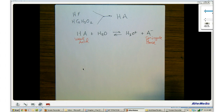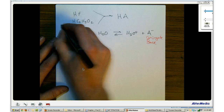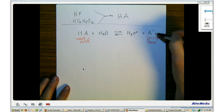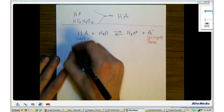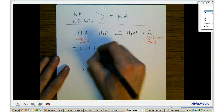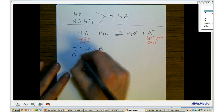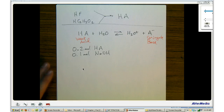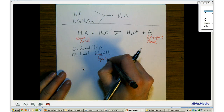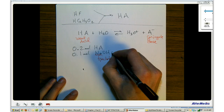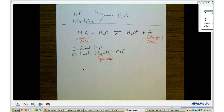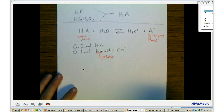How do you create a buffer if you just have a weak acid — say hydrofluoric acid or acetic acid? You need to start with an amount of the conjugate base. Say I have 0.2 moles of HA and I react it with 0.1 moles of sodium hydroxide. I want to ignore the Na because it's a spectator ion — what's really reacting is 0.1 moles of OH-.